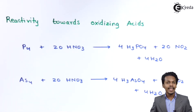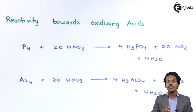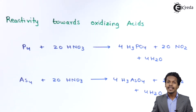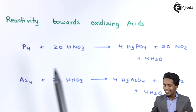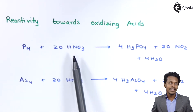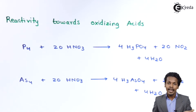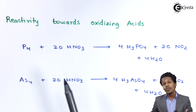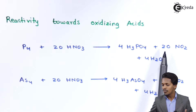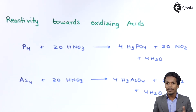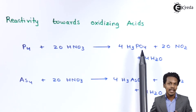The next is reactivity towards oxidizing acids. Here I am going to talk about the reaction of group 15 elements with nitric acid as well as with sulphuric acid. Starting with nitrogen — nitrogen is not very much reactive to nitric acid, so no reaction is shown. But phosphorus reacts with 20 moles of concentrated hot nitric acid to produce H3PO4 (phosphoric acid) along with 20 moles of NO2 and H2O as a by-product.